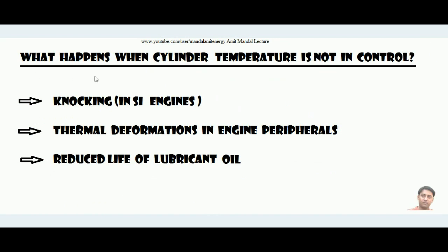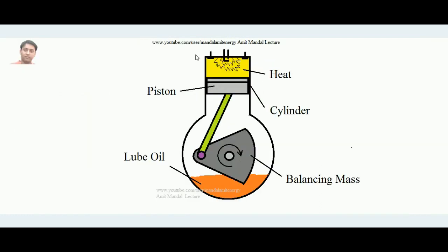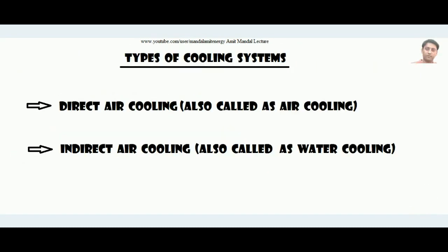The main heat source is the engine cylinder, also called the engine head. By controlling temperature at the engine head, temperature is controlled throughout. We must adopt a cooling system applied over the engine head to take away the excess heat. There are two types: direct air cooling (also called air cooling) and indirect air cooling (also called water cooling or coolant cooling).